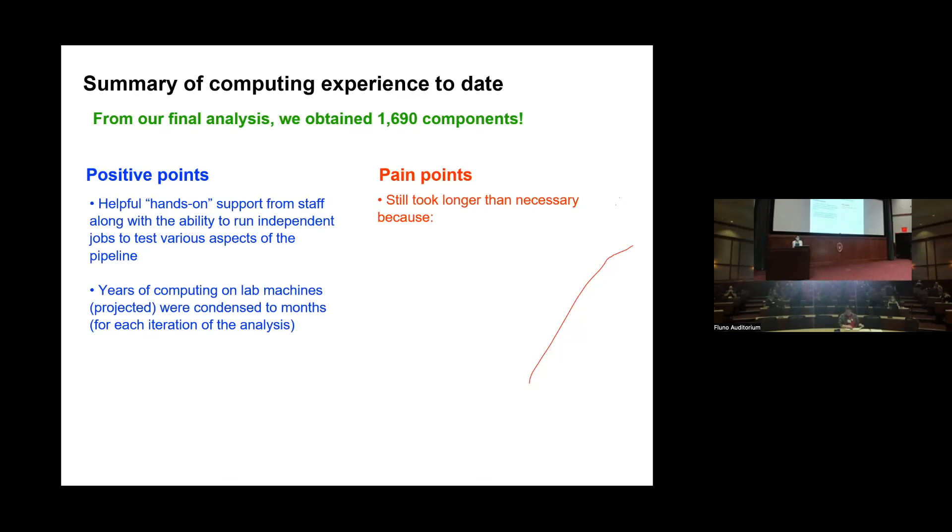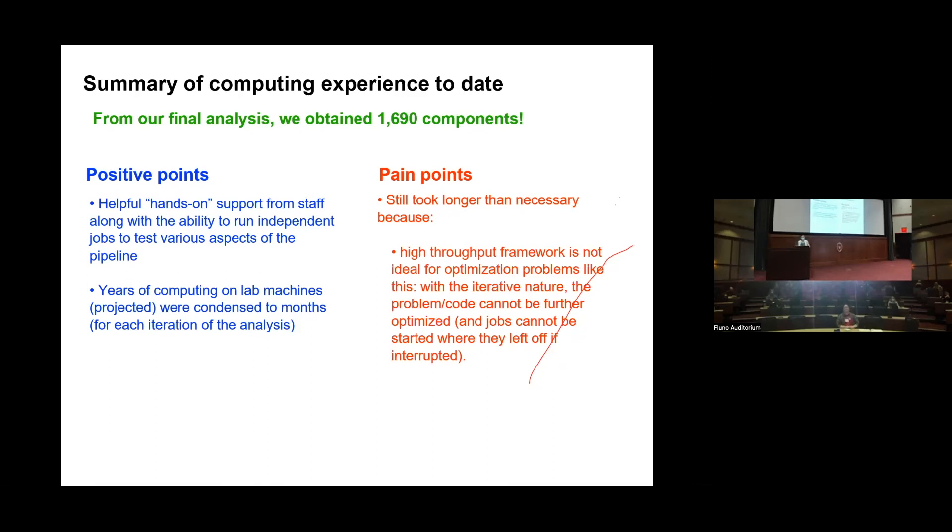But some of the jobs, as I mentioned, still took longer than necessary, and that's just due to the overall nature of our analysis here. We knew going in it's not really optimized for the high throughput framework. Unfortunately, we couldn't optimize it any further. One issue that we had was if a job got interrupted, which happened from time to time, it was not such that we could just restart where we left off—it had to start over. Some of our jobs seemed to be sent to a slower or busier machine that would get kicked. Unfortunately, there's not much anyone can do about that, so we just powered on through.